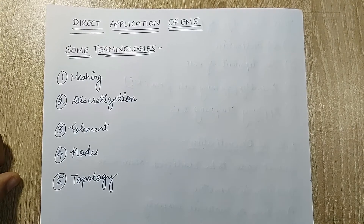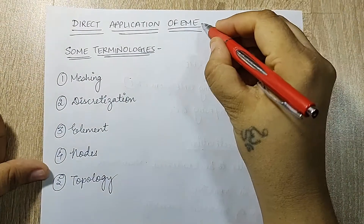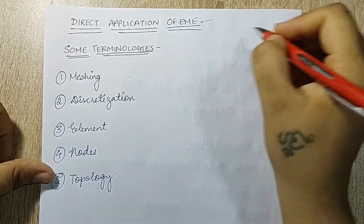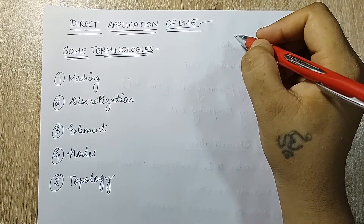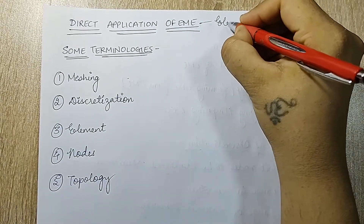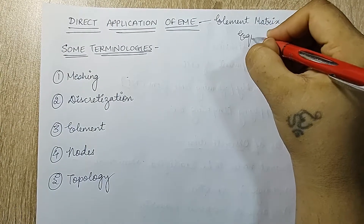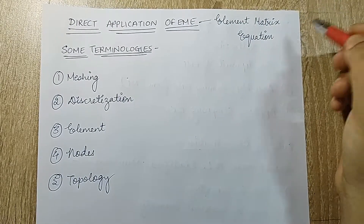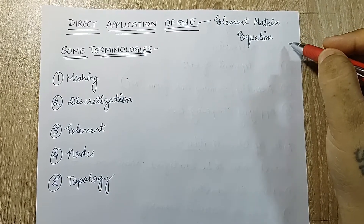Welcome to the next session of Finite Element Analysis. I'm starting with the next chapter: Direct Application of EME. EME stands for Element Matrix Equation. The elements we are going to form will be in the form of a matrix and they will be in the form of an equation — that is the whole meaning of this term.